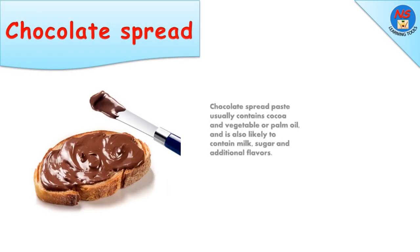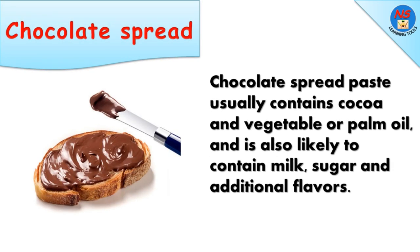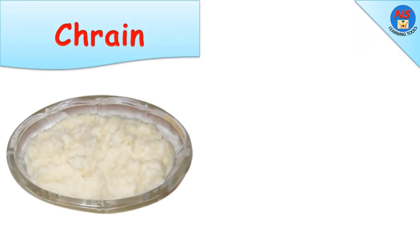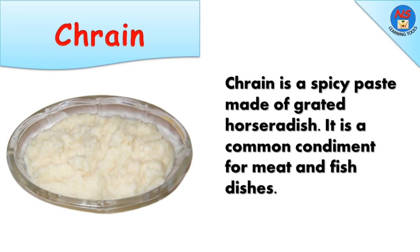Chocolate spread is a paste that usually contains cocoa and vegetable or palm oil, and is also likely to contain milk, sugar, and additional flavors. Crane is a spicy paste made of grated horseradish; it is a common condiment for meat and fish dishes.